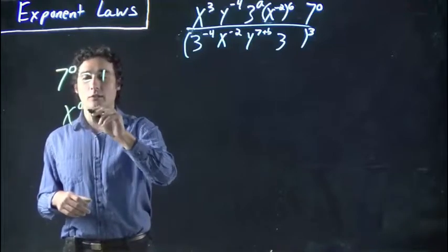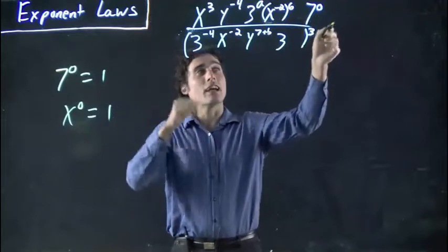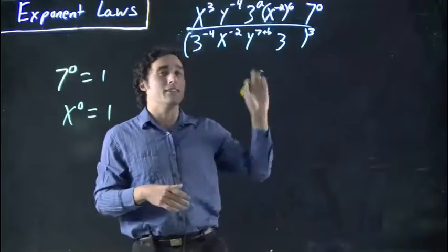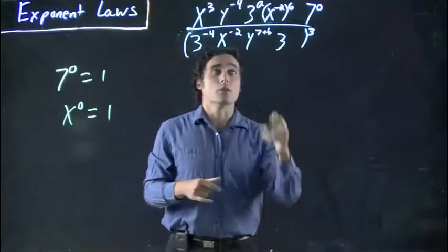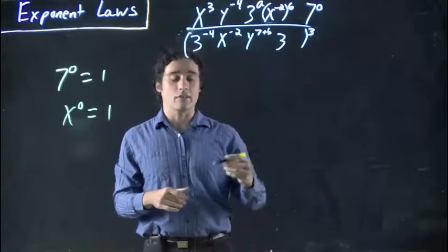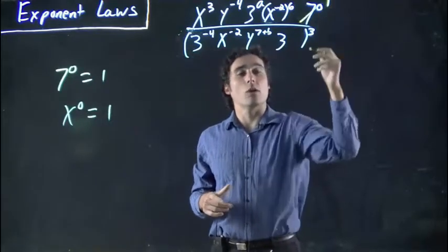Anything to the power of 0 is 1. So 7 to the power of 0 is 1. X to the power of 0 is 1. If I put brackets around this entire thing and put it to the power of 0, you could just say it's equal to 1 and go home and call it a day, it's done, but I'm not that nice. So we're going to have to actually solve this.